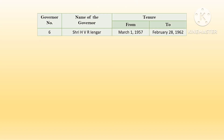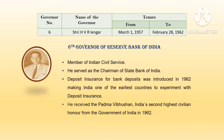The sixth governor was H.V.R. Iyengar. His tenure was from March 1, 1957 till February 28, 1962. He was a member of the Indian Civil Service and served as chairman of the State Bank of India. During his tenure, deposit insurance for bank deposits was introduced in 1962, making India one of the earliest countries to experiment with deposit insurance. He was also awarded the Padma Bhushan.